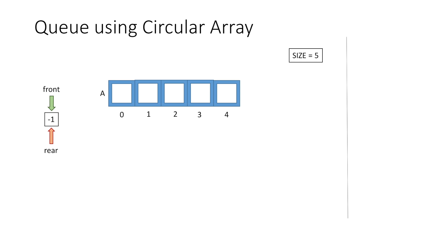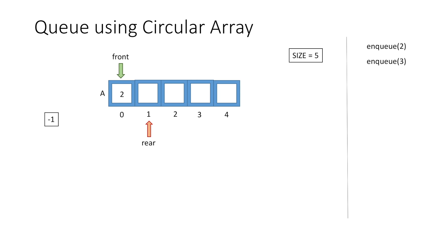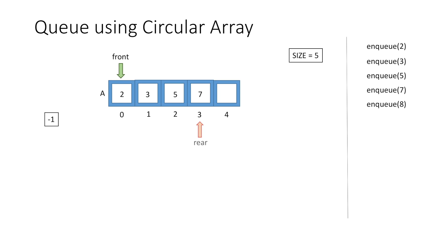Now let's start inserting some values in our queue. When we call the enqueue function to insert the value 2, as we are inserting the first element, we make front equal to 0, then increment rear by 1 and insert the value 2 at rear. Similarly, enqueuing 3 increments rear by 1 and inserts at index 1. Enqueuing 5 inserts at index 2, then value 7 at index 3 and value 8 at index 4.